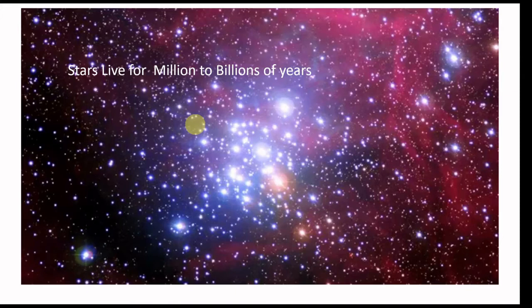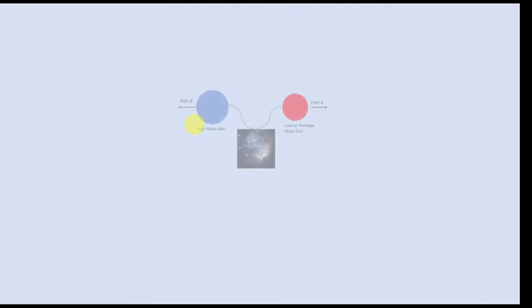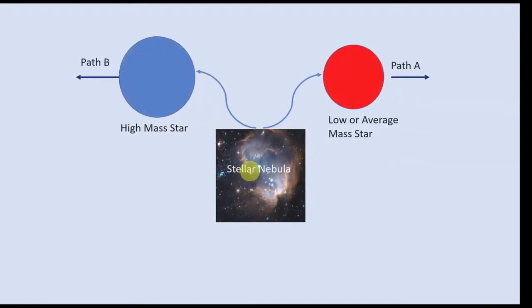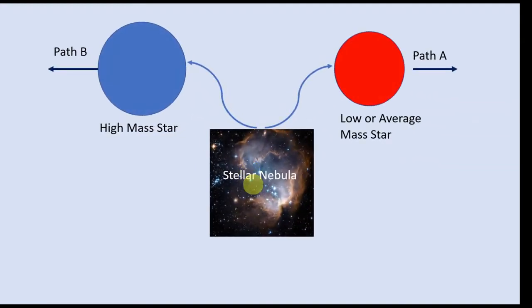These words have very specific meanings as you will see in the following lectures. To begin with, let's look at the formation of a star from what is called giant molecular clouds or stellar nebula. Depending on the original mass of the star when it formed from the stellar nebula and reached a stage called the main sequence, from that stage the evolutionary path will be different for different masses.